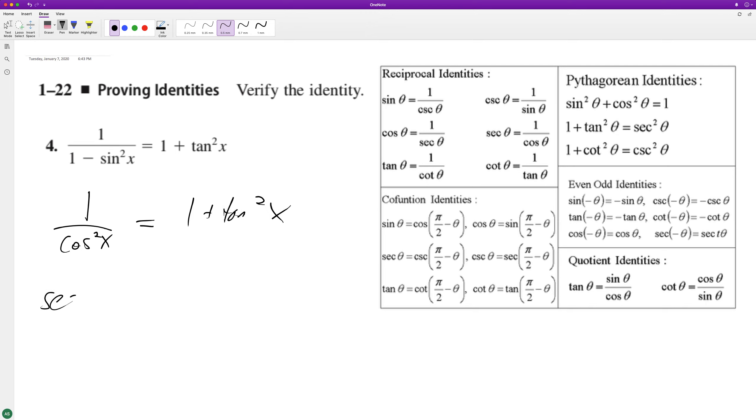And this is the same thing as the secant squared x. That's another way of saying one over cosine. Oops.